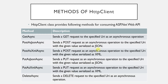Next we are going to see the important, most frequently used methods of the HttpClient class. As you can see here, all the methods are asynchronous — they are marked with the postfix 'Async'. The first method is GetAsync, which is used to send a GET request to the specified URI as an asynchronous operation. The next two methods represent POST requests — whenever you want to send a POST request to a specified URI, you can use either PostAsJsonAsync or PostAsXmlAsync.